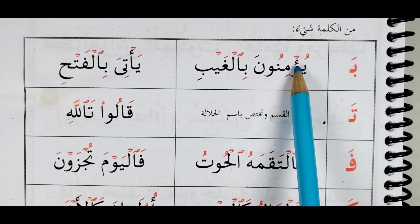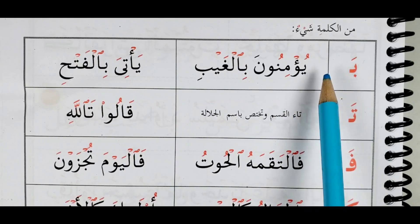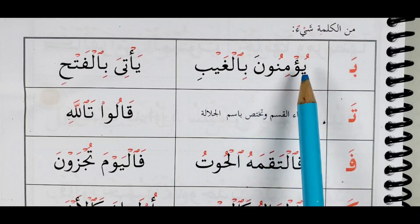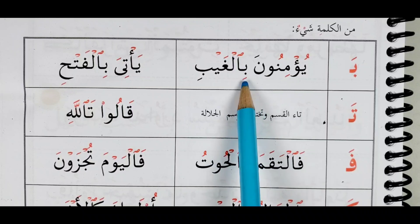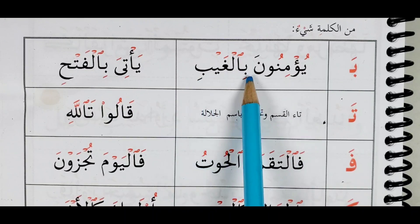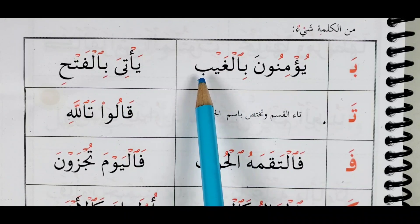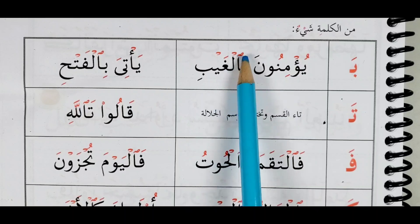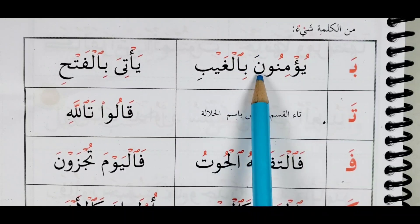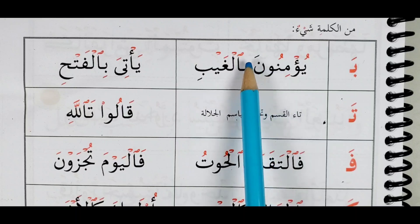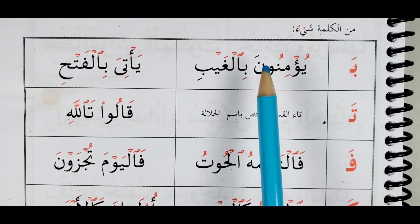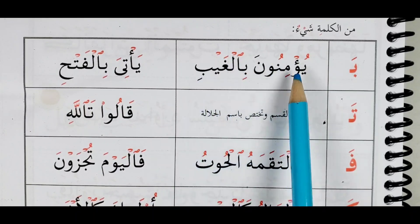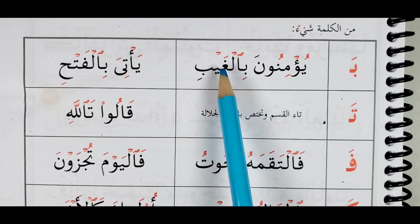The first example is يؤمنون — remember the Hamza with a sukoon, يؤمنون. Now بالغيب: you come from the ب to the لام. This is a skipping sign, and there is something before it. If there is nothing before it, like in previous pages, you just read starting with أ. So here we say بالغيب — يؤمنون بالغيب.